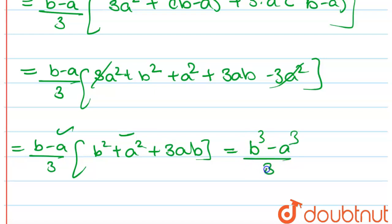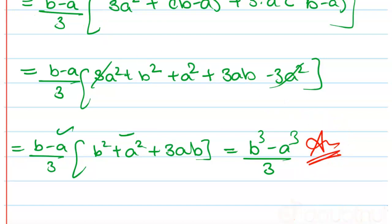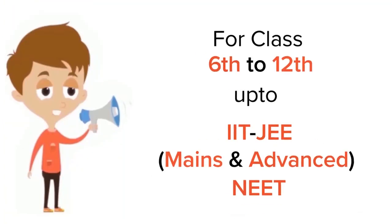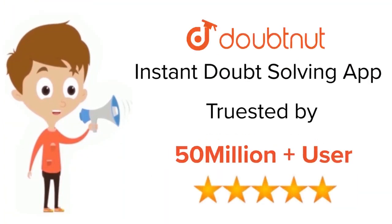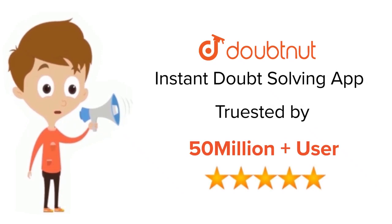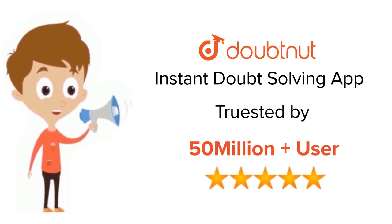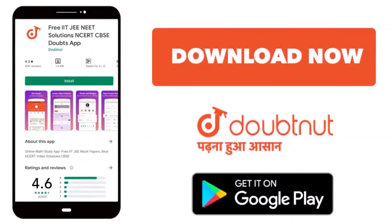So the final answer is b³ minus a³ divided by 3. For class 6 to 12, IIT JEE, and NEET level, trusted by more than 5 crore students — download the DoubtNet app today.